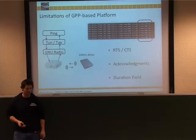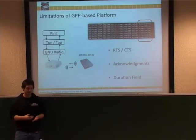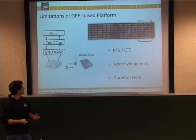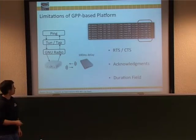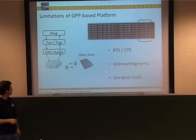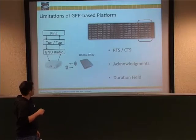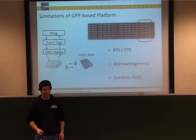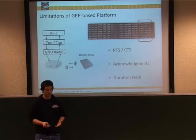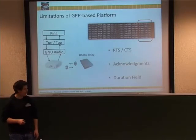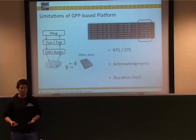Now let me talk about the limitations. The advantage of doing everything on the CPU is it's really easy to hack and play around with, but the disadvantage is you add delay. You can connect this to the Linux TCP/IP stack and simply ping the other device — sending frames back and forth between the USRP and a normal Wi-Fi card. Here we added 100 ms delay artificially. The point is about orders of magnitude: with this system we are in the low-millisecond scale.